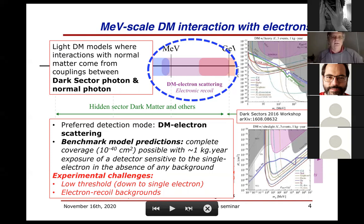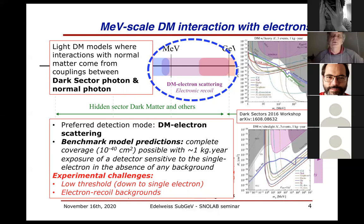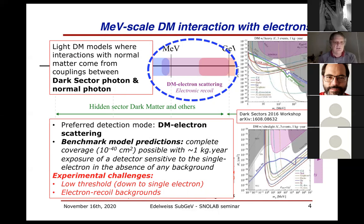Around the MeV range, you could have good coverage of all these benchmark models with an experiment having one kilogram of detector mass — either silicon or germanium. Studies done in the Snowmass process in 2016 showed that with a theoretical detector of one kilogram and negligible background, you could cover all signals where the signal is just an electron recoiling from a collision with a WIMP — so-called dark matter electron scattering searches.